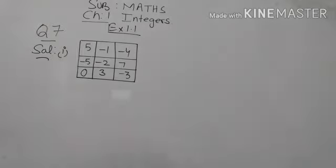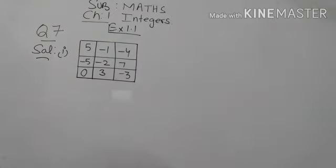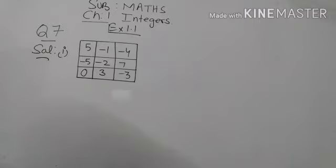Hello students, today we are going to start question number 7 of exercise 1.1. In this question, we are given a magic square where each row, column, and diagonal have the same sum. We need to check which of the following is a magic square. There are some squares and we have to find whether these are magic squares or not.